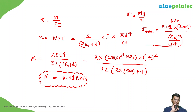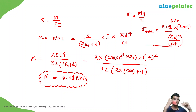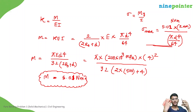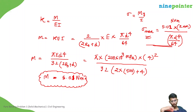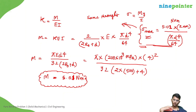Regarding sign convention: do not worry about it in the formula — just go with intuition. From the diagram, the curvature tells us the upper portion is in tension and the lower portion is in compression. Since the circular cross-section is doubly symmetric, the maximum compressive stress and maximum tensile stress are equal in magnitude. We are just writing the magnitude using the formula.